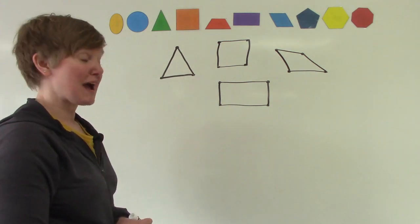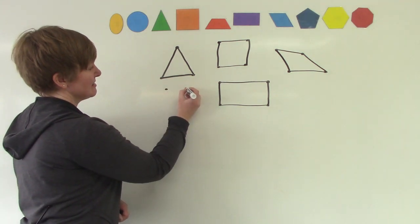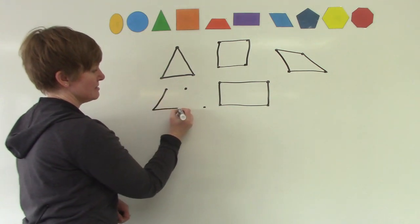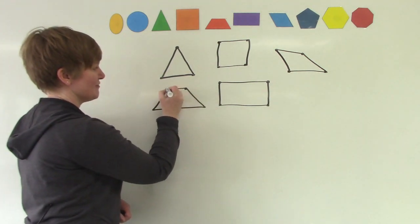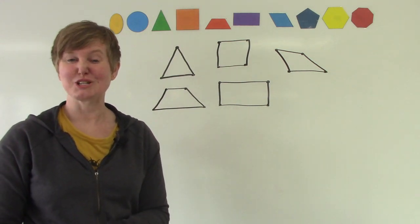For a trapezoid we also have four sides. One, two, three, four. I'd like for you to try drawing a trapezoid.